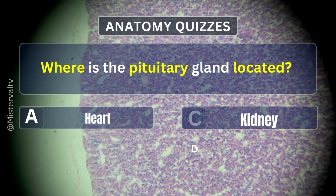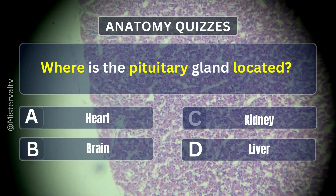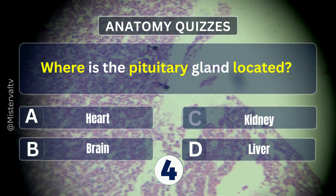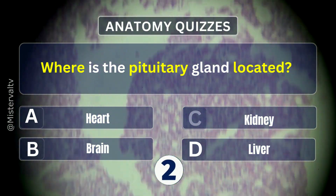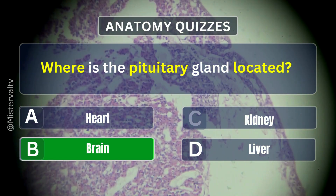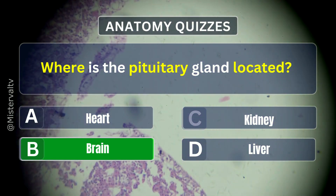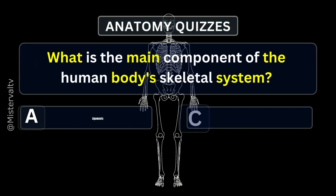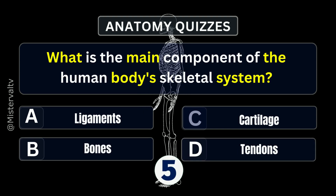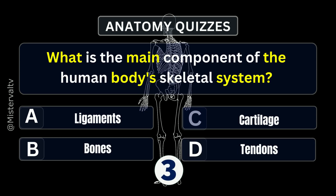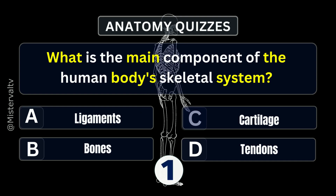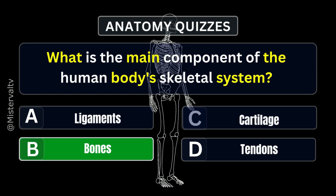Where is the pituitary gland located? Answer. B. Brain. What is the main component of the human body's skeletal system? Answer. B. Bones.